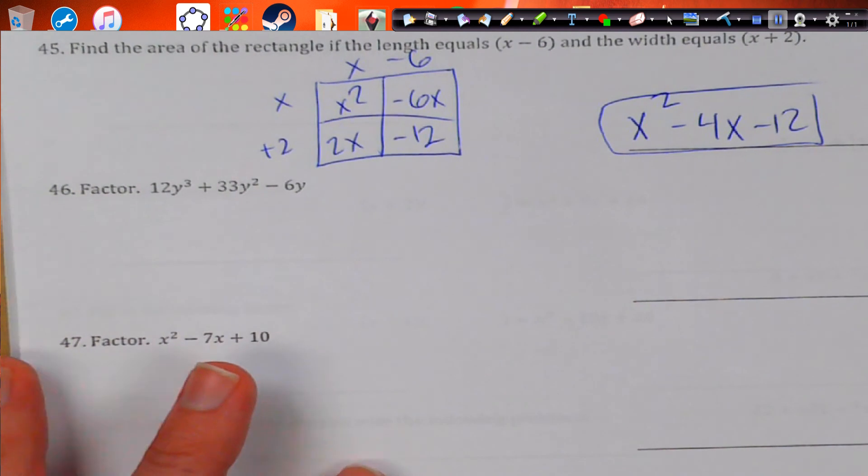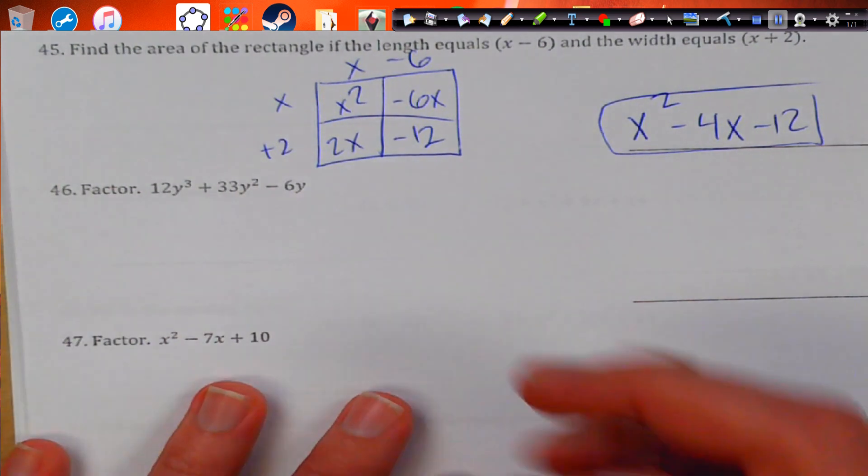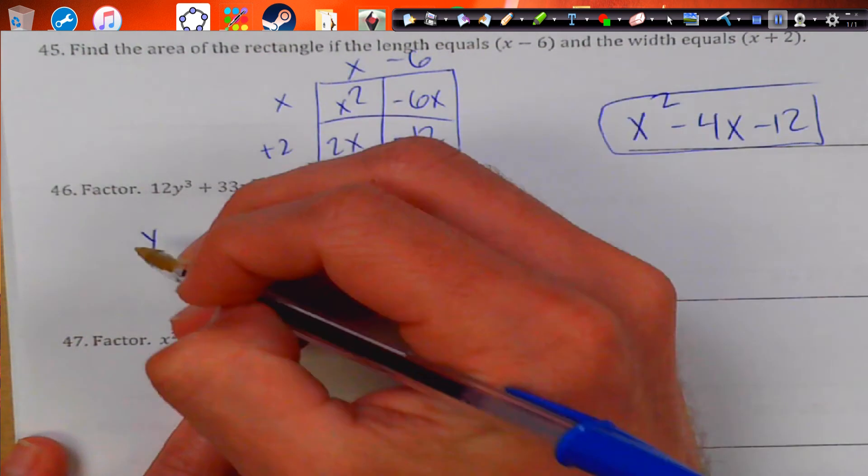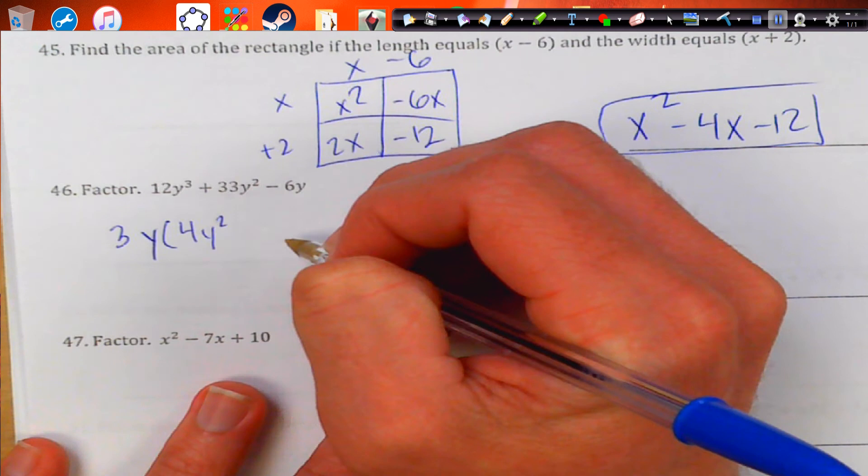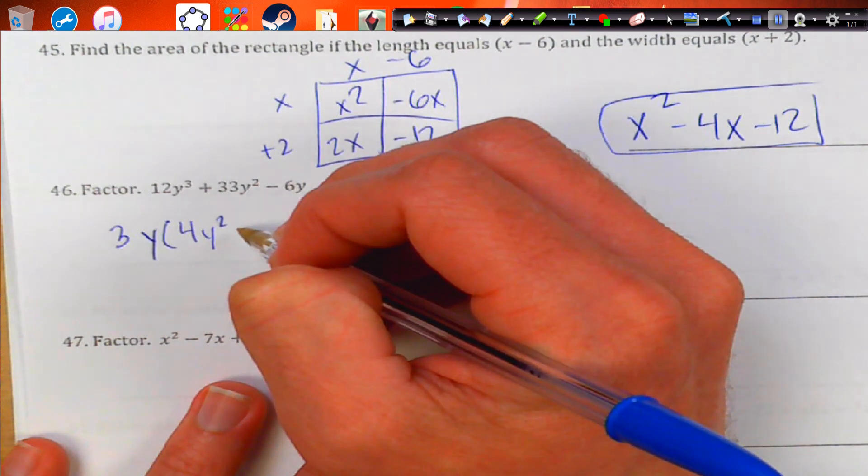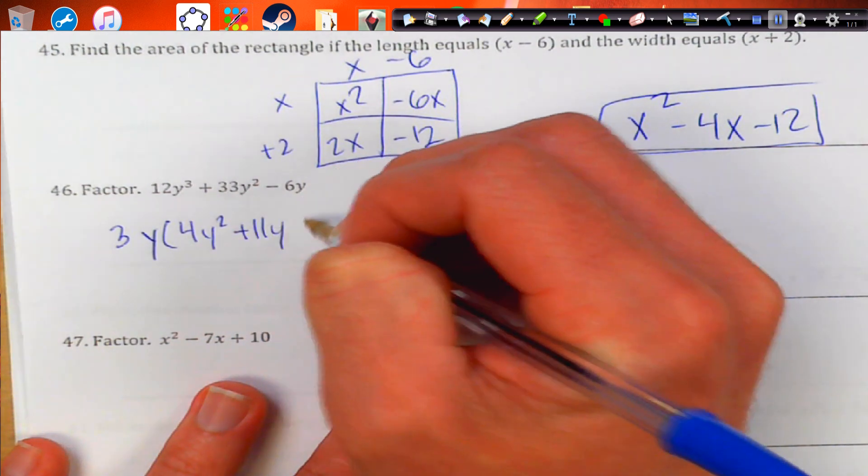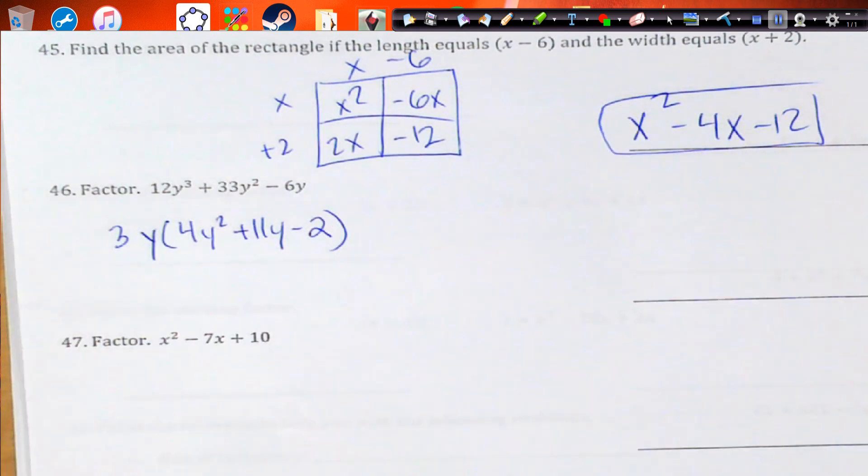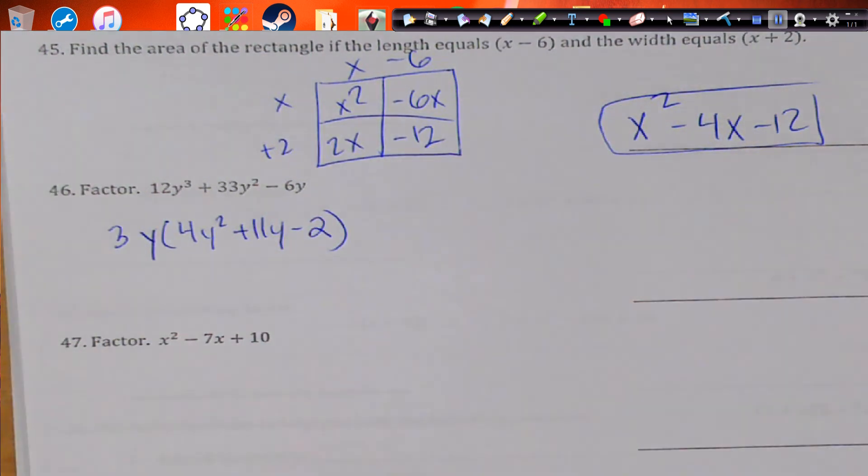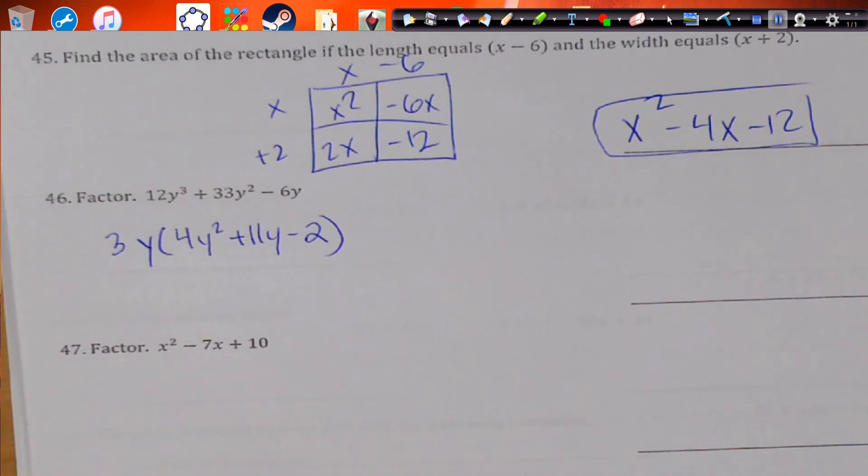Factor. So, first thing is always look for a GCF. I see here that y could be taken out. So, it also looks like a 3 could probably be taken out. So, that becomes 4y squared. This becomes 11y. And then, this can become negative 2. Now, we got to double check to see if we can factor that further by splitting the middle term.